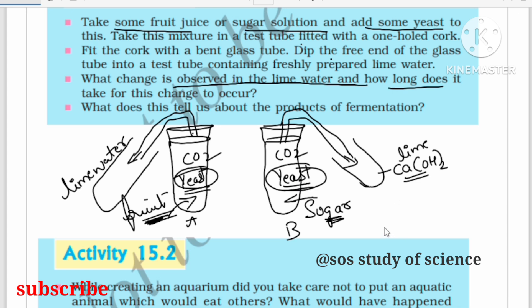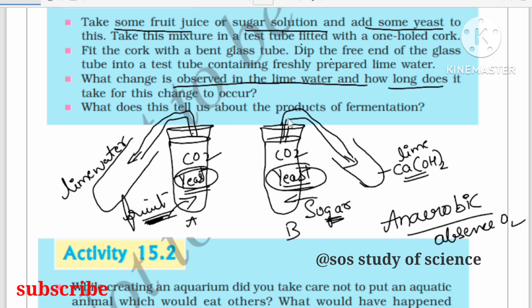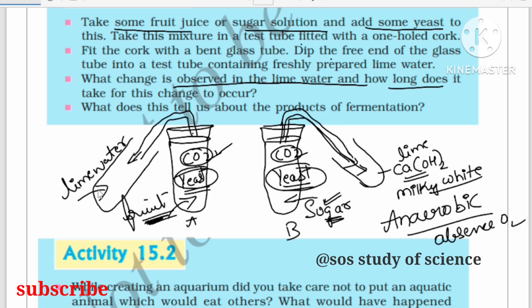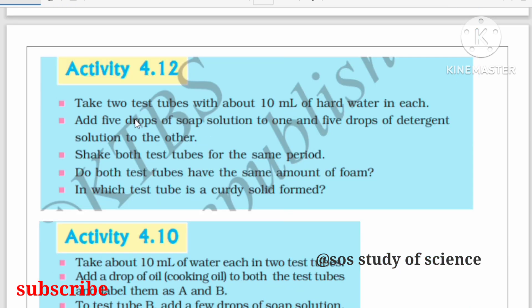In the absence of oxygen, yeast respires and releases carbon dioxide. This carbon dioxide travels through the bent tube into the lime water, causing the lime water to turn milky white. This experiment shows that yeast lives on fruit juice and sugar, respires, and releases carbon dioxide, which is identified by the lime water test.